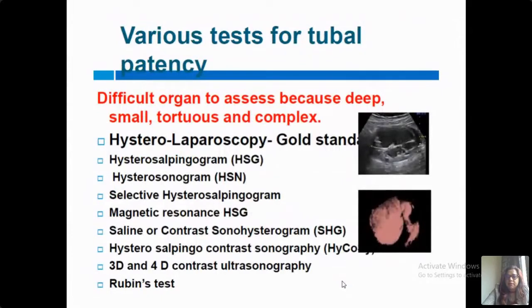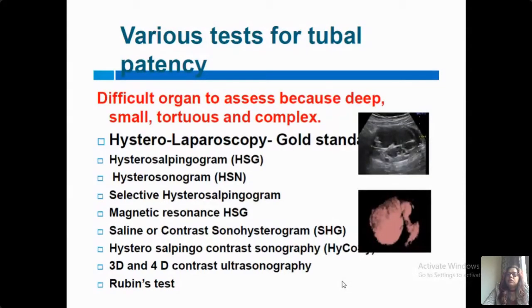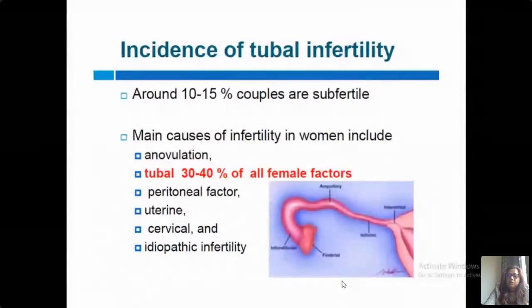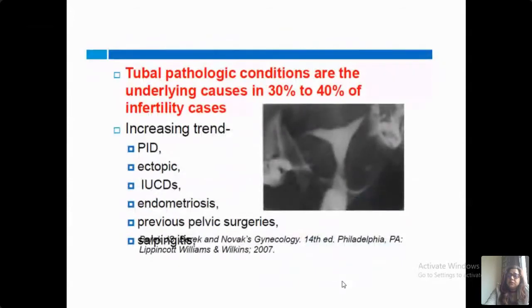Various tests for tubal patency are available. The gold standard is hysterolap­aroscopy, but we cannot do hysterolaparoscopy in each and every patient — we need some screening techniques. That is why we have other imaging studies for fallopian tubes: HSG, the sonohysterogram, selective hysterosalpingogram, magnetic resonance HSG, saline or contrast sonohysterogram, hysterosalpingo-contrast sonography, 3D and 4D contrast ultrasonography, and the traditional Rubin's test. Thirty to forty percent of female factors in infertility are contributed by tubal factors, with increasing trends of PID, ectopic pregnancies, IUCDs, endometriosis, pelvic surgeries, and salpingitis contributing to tubal pathologies.